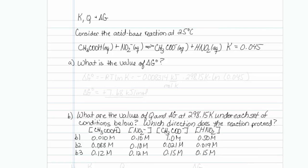The first question asks, what is the value of delta G naught? For that, we can use the formula delta G naught is equal to minus RT natural log of K.